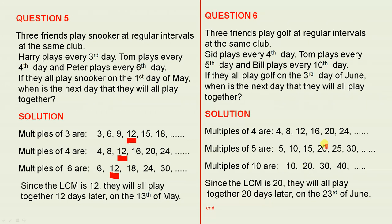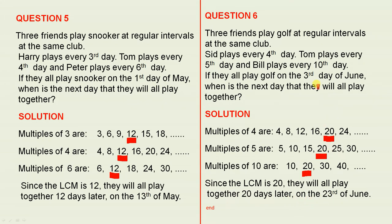If we look carefully at the list, 20 is the lowest number that occurs in each of the lists. Since the LCM is 20, they will all play together 20 days later on the 23rd of June. Just add 20 to the 3rd, and that gives you the 23rd of June.